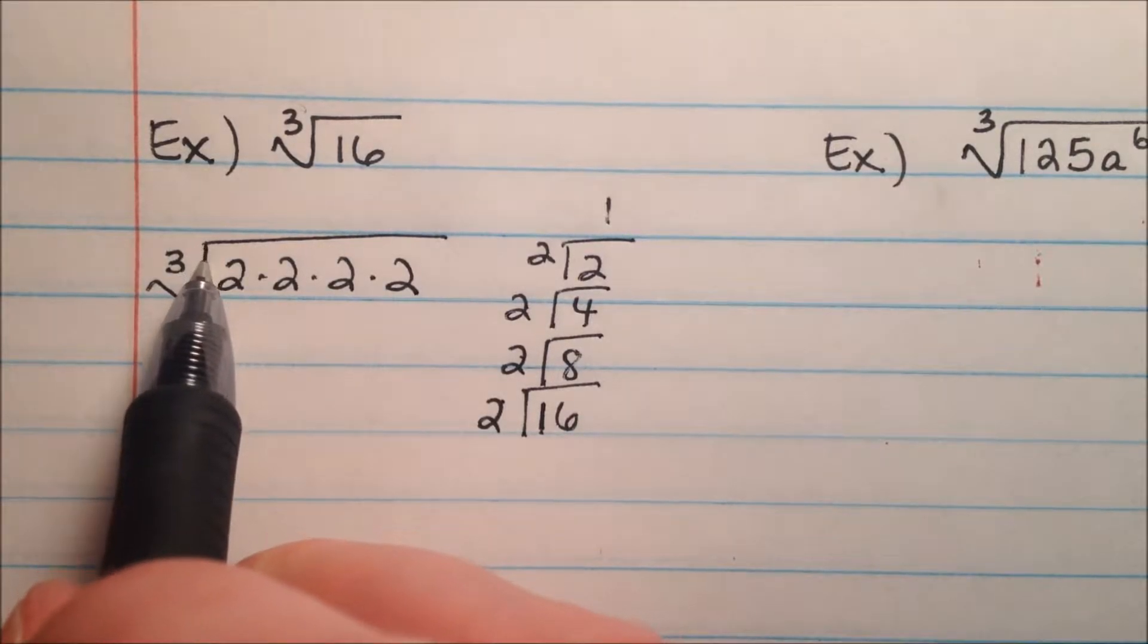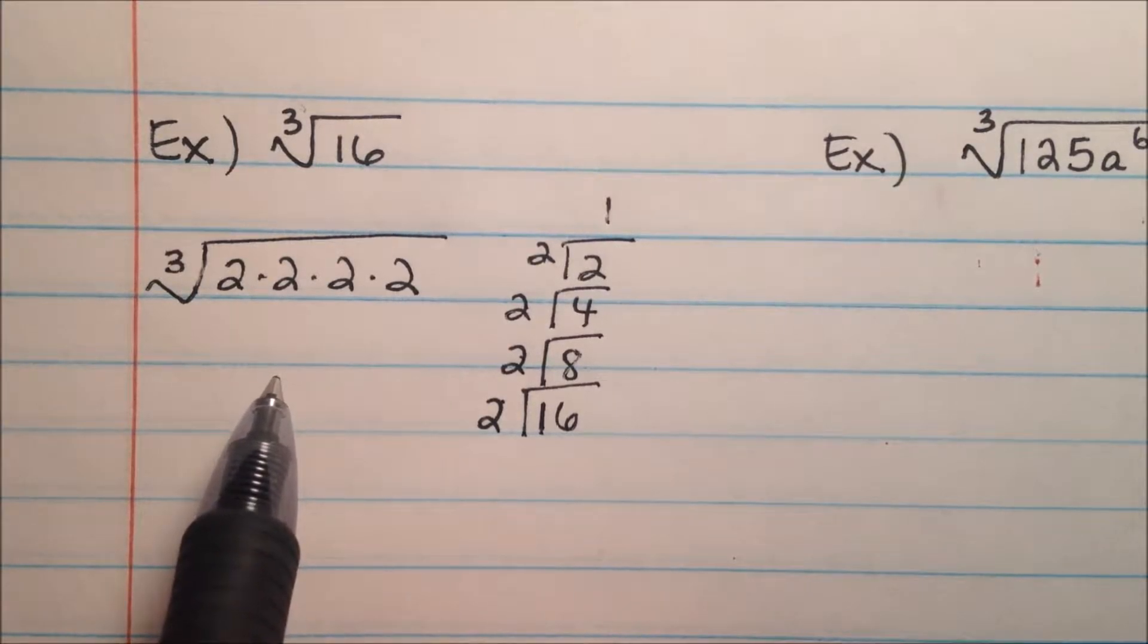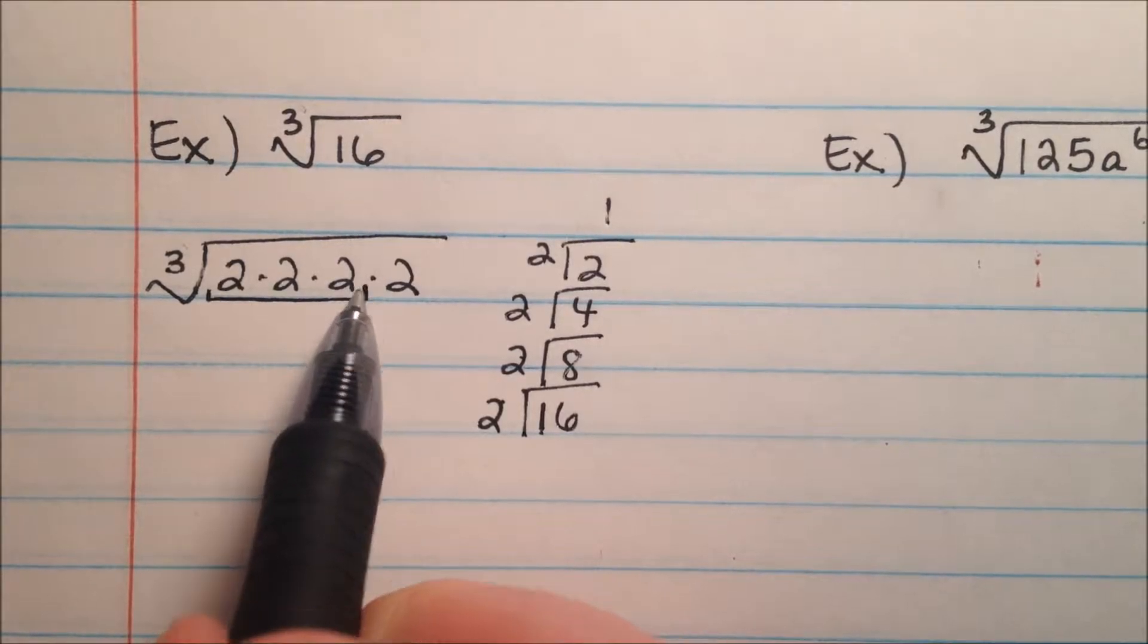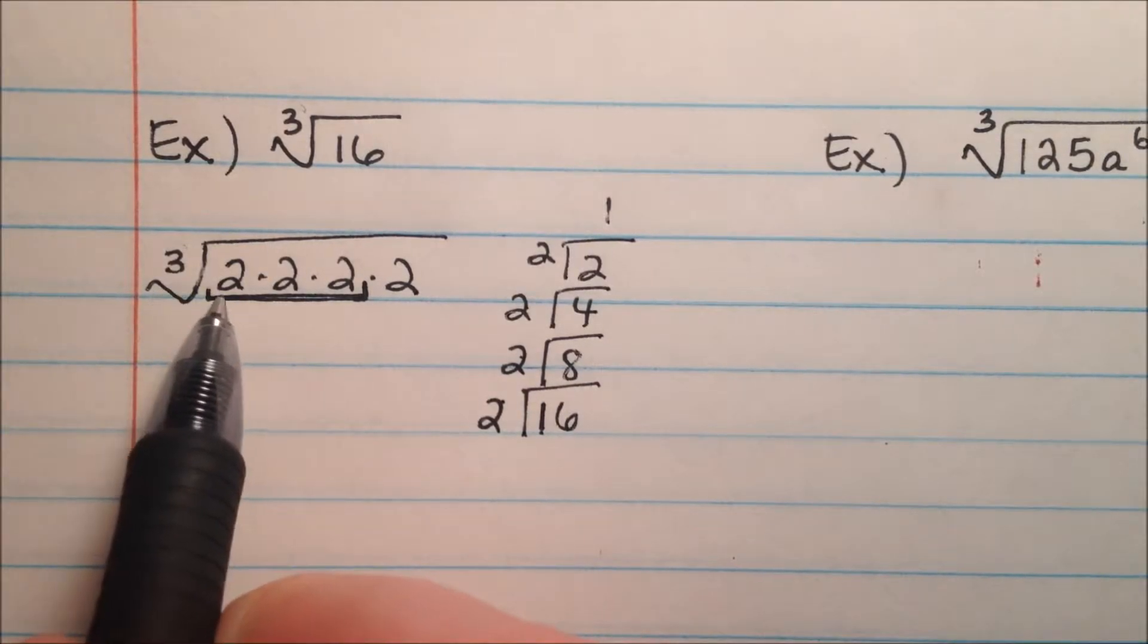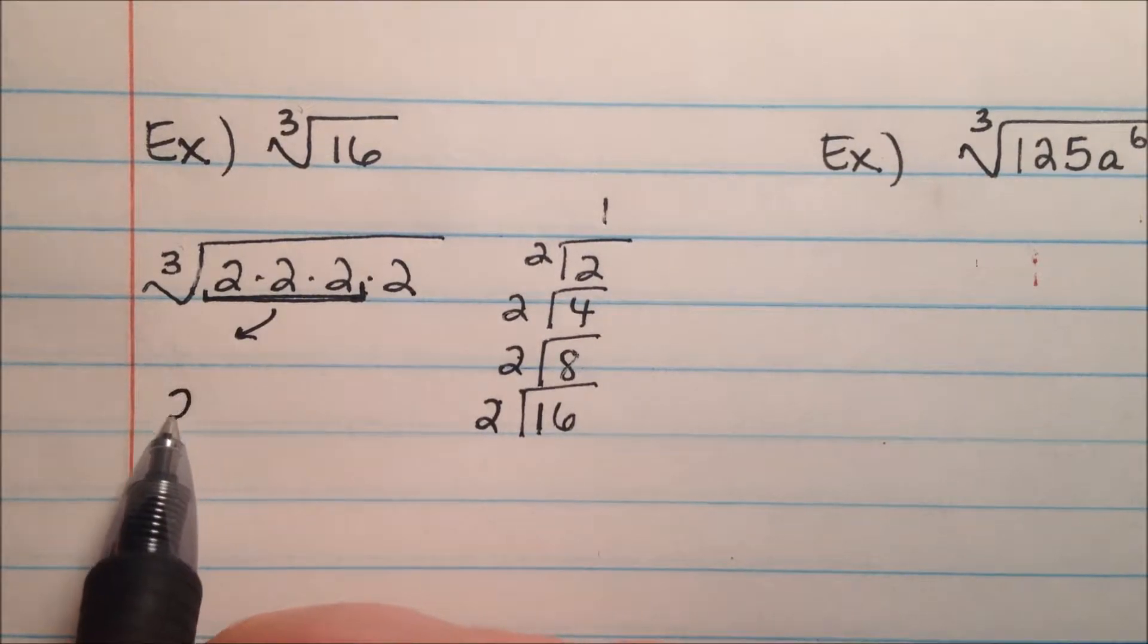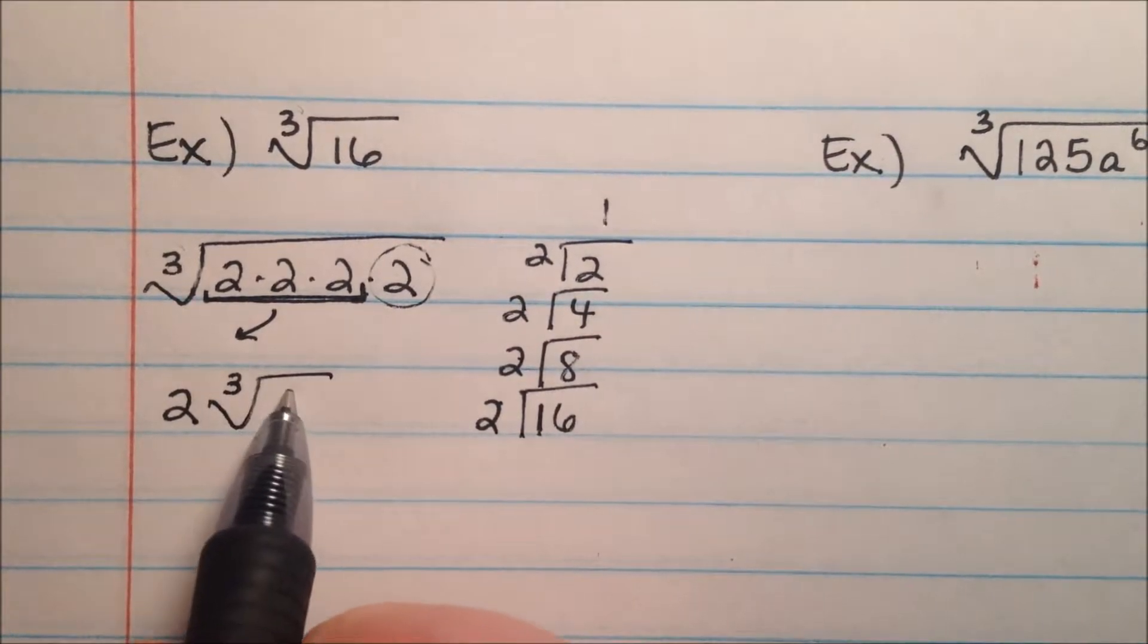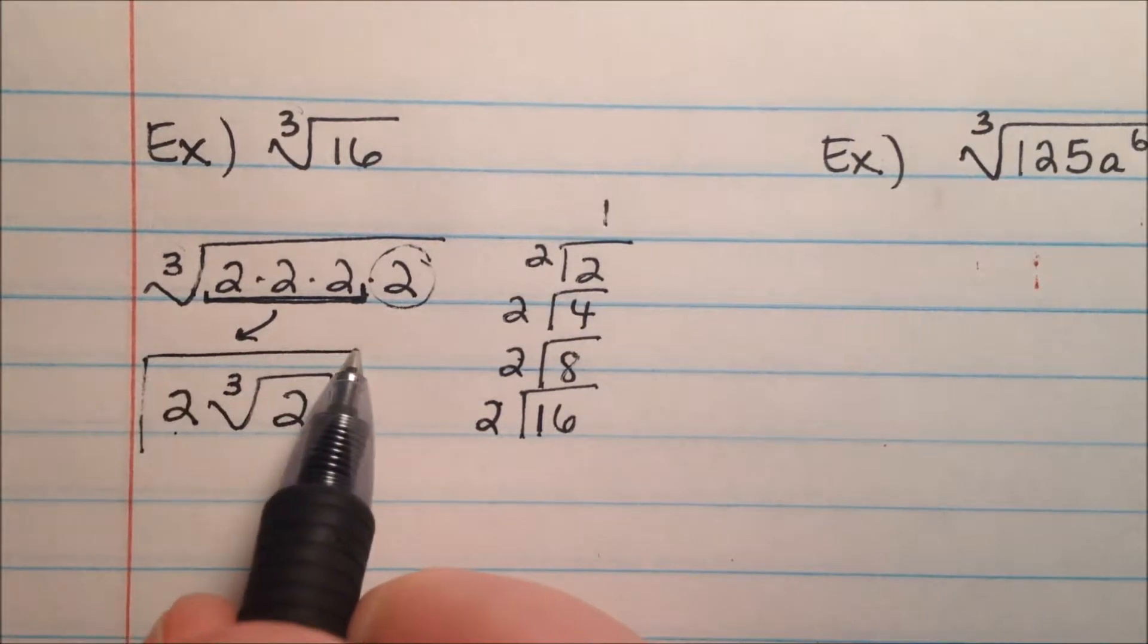So previously, when we were finding the square roots of these values, we were taking pairs of numbers out, or twins. In this case, since it's a cubed root, I'm going to be taking triplets out. So for these higher index values, whatever this index value is, that's the number of groupings that you're going to do. So a grouping of 3. So once you have a solid grouping of 3, that 2 comes on the outside. We have one 2 left over. So we're going to rewrite this now as 2 times the cubed root of 2 as our final answer.